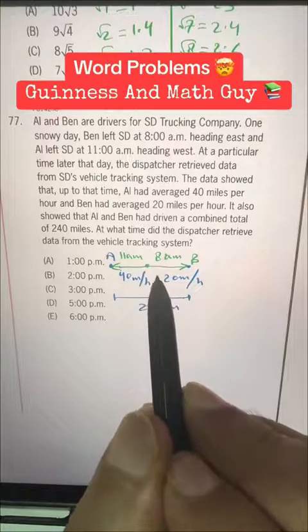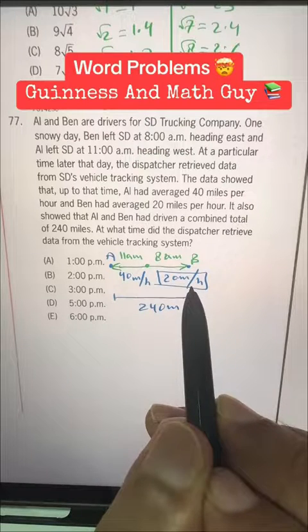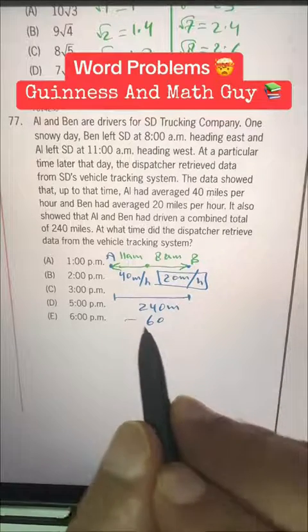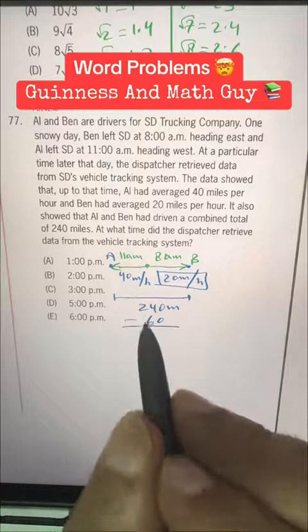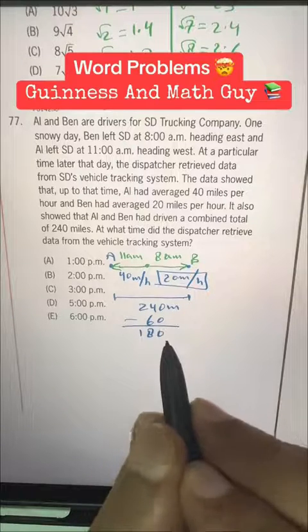So for three hours, Ben was alone driving at this speed. So 20 miles per hour means for three hours, 20 plus 20 plus 20, 60 miles were gone when Al started. So 240 minus 60 is 180 miles.